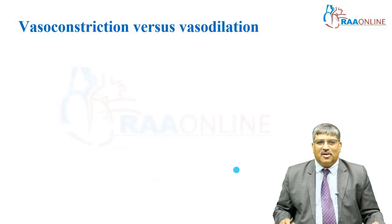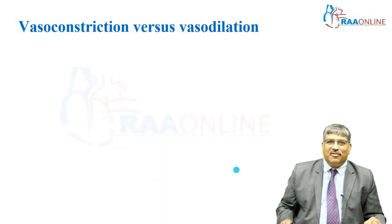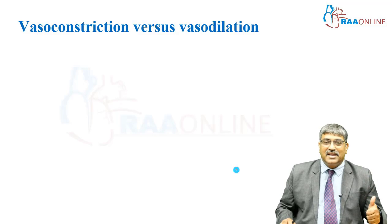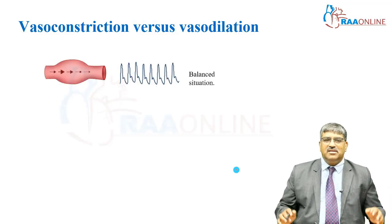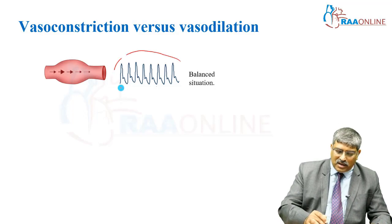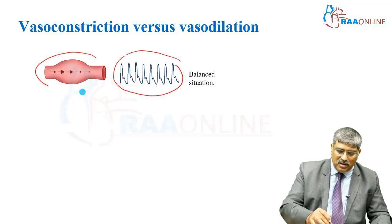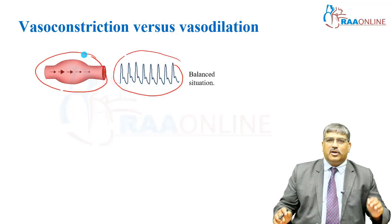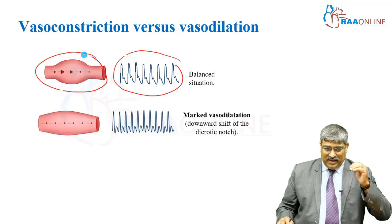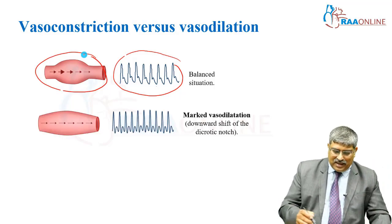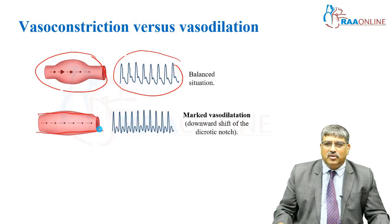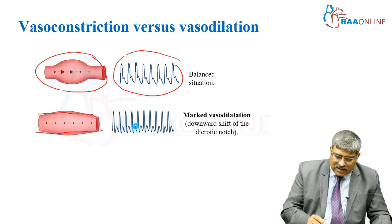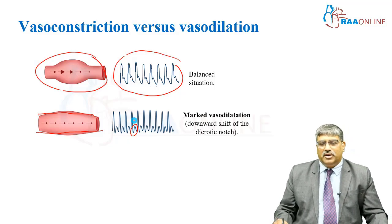Coming to another important concept in arterial waveform — whether it is a constricted waveform or a dilated waveform, how can you find out? This is the normal arterial waveform, and here you can see the blood flow into the arterial system. In marked vasodilatation, the lumen is dilated too much, and here the dicrotic notch is shifted downwards.